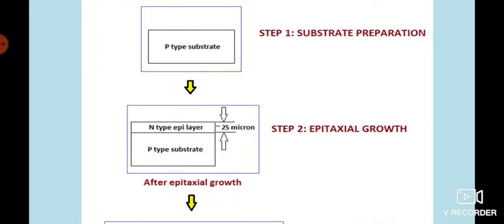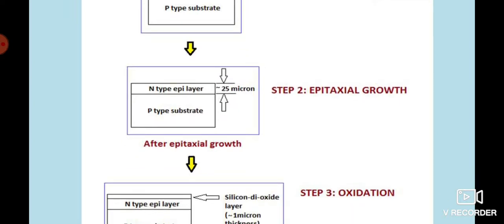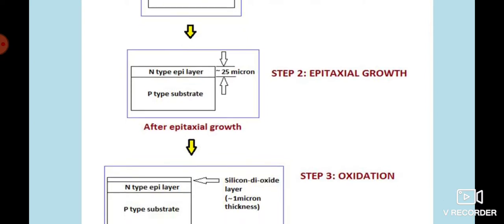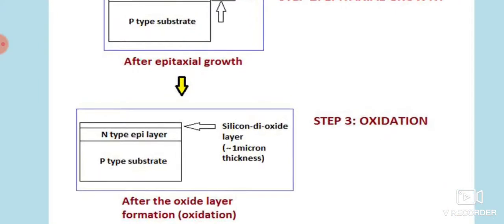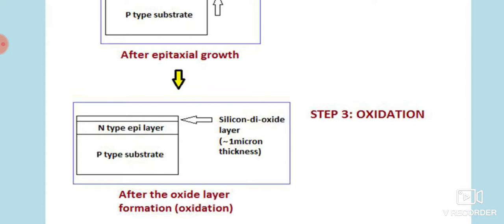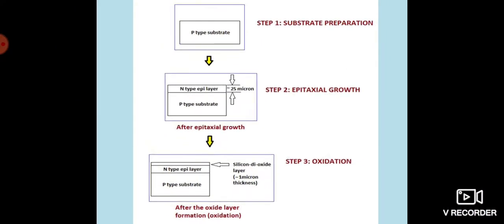In step one, we took a P-type substrate with a thickness of 200 microns. The second step was epitaxial growth, where we grow a very thin N-type layer of about 25 micron thickness above the P-type substrate. In step three, we carried out the oxidation technique, where we deposited or grew a very thin silicon dioxide layer — about 1 micron thickness — over the epitaxial layer. Now we will see how to carry out the photolithography technique.